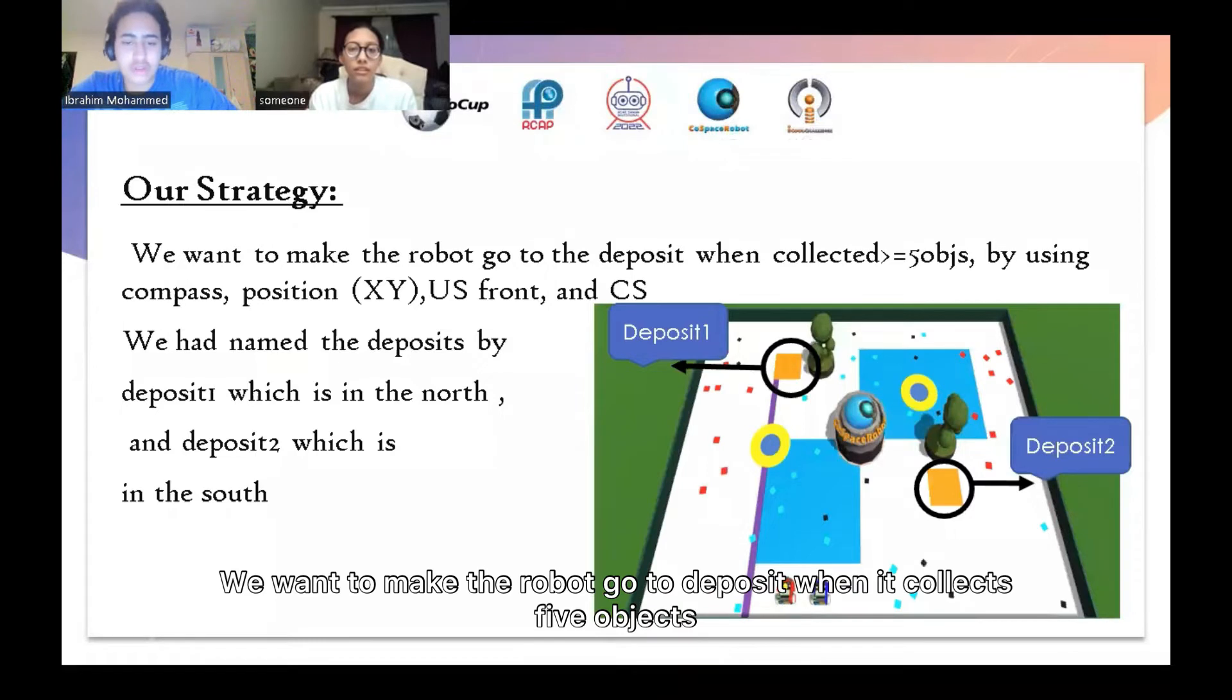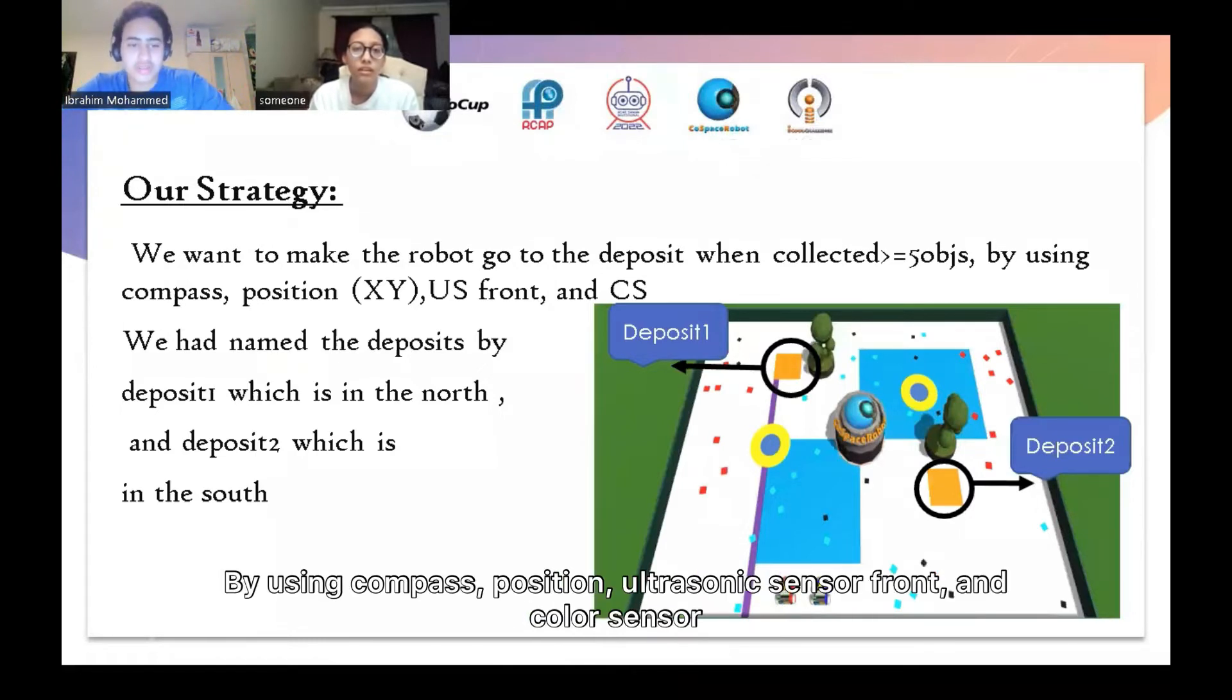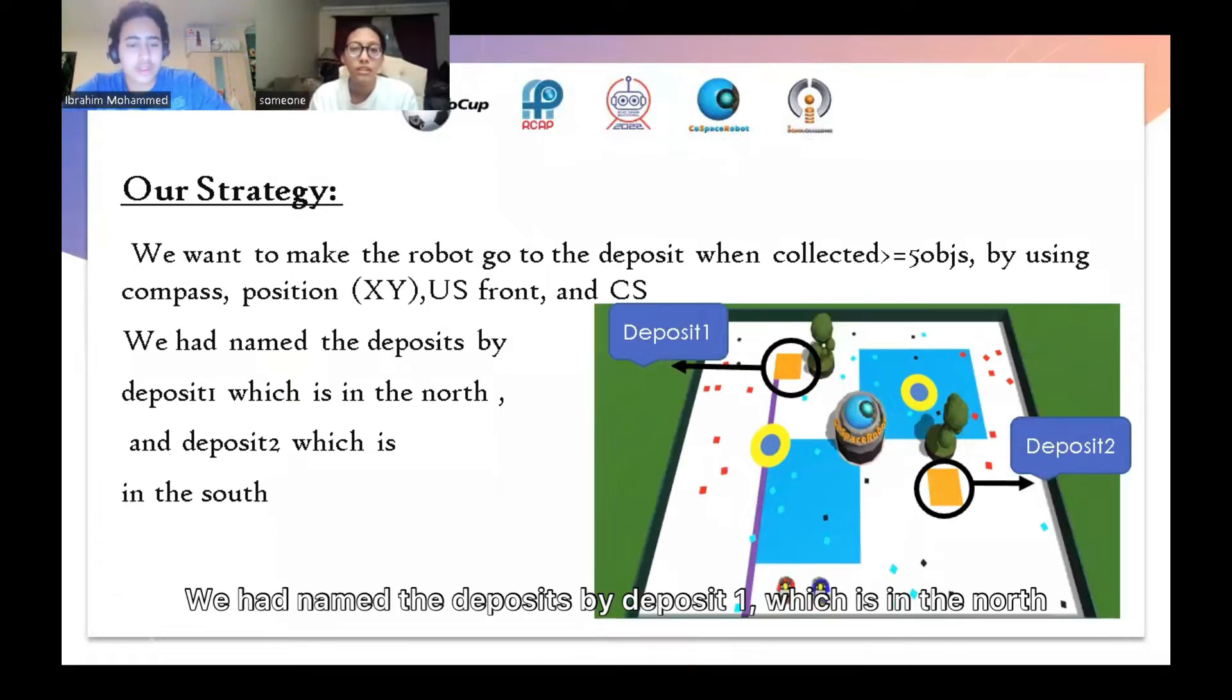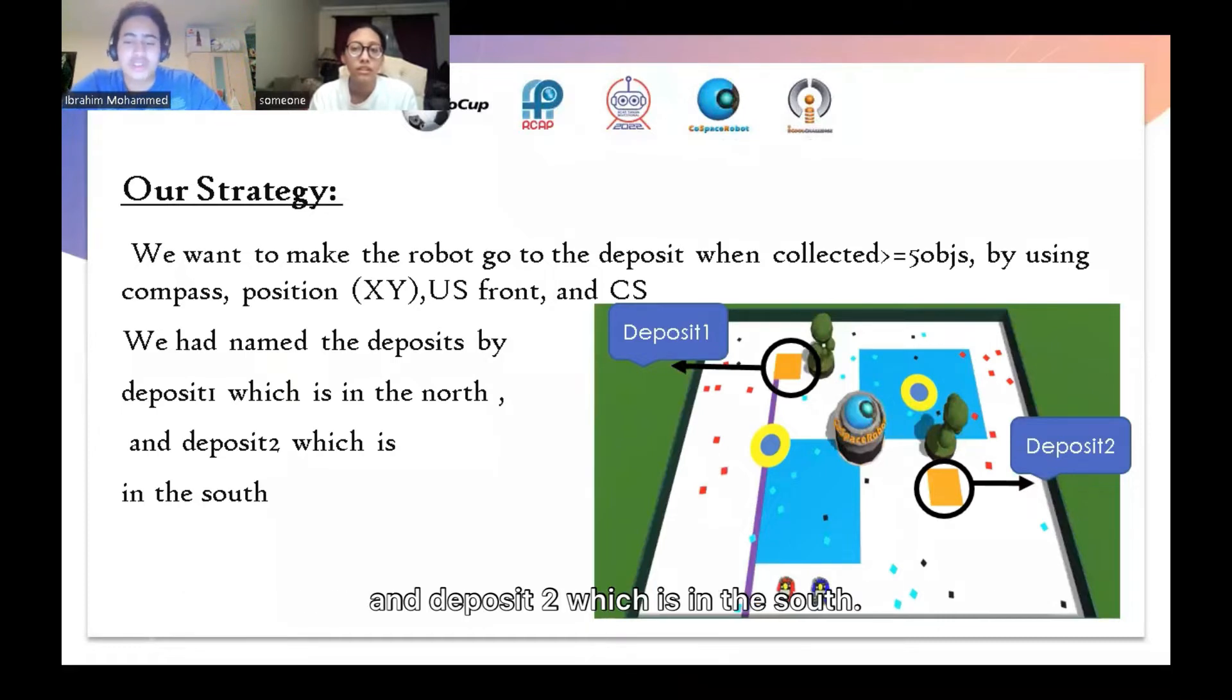Our strategy: we want to make the robot go to deposit when collected 50 objects, by using compass position, ultrasonic sensor front, and color sensor. We had named the deposit by deposit 1, which is in the north, and deposit 2, which is in the south.